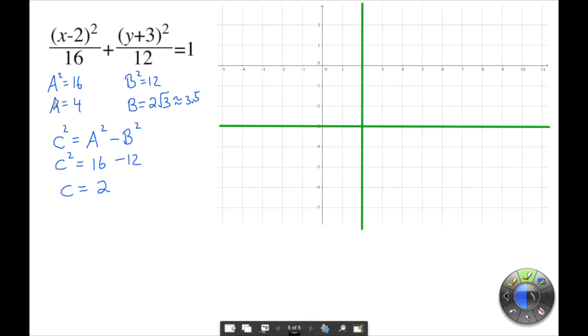So a is going to go left and right because it's associated with x, 4 to the left, 4 to the right. The b is going to go up and down 3.5 approximately. And then our c is going to be on the major axis. Now that's really important. C is always on the major axis. So it's whichever one of these is bigger. So c is going to be on this line.